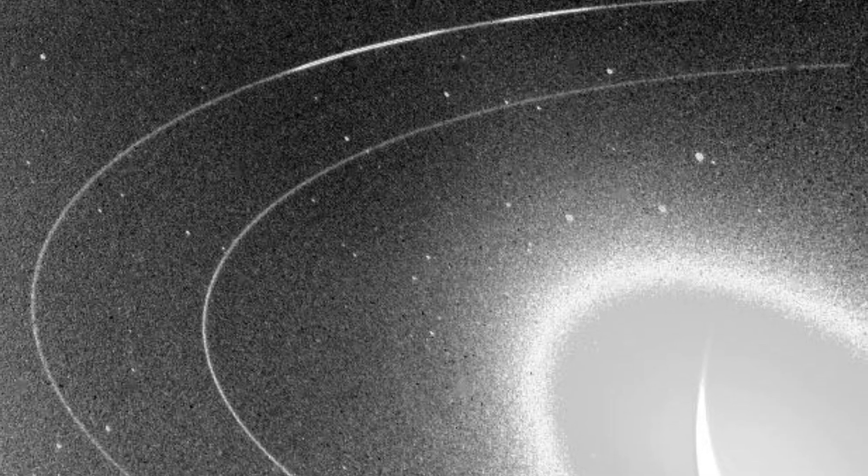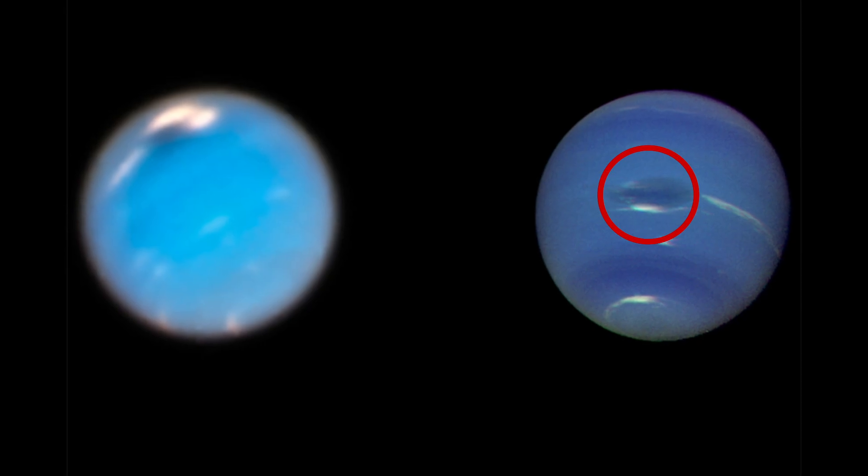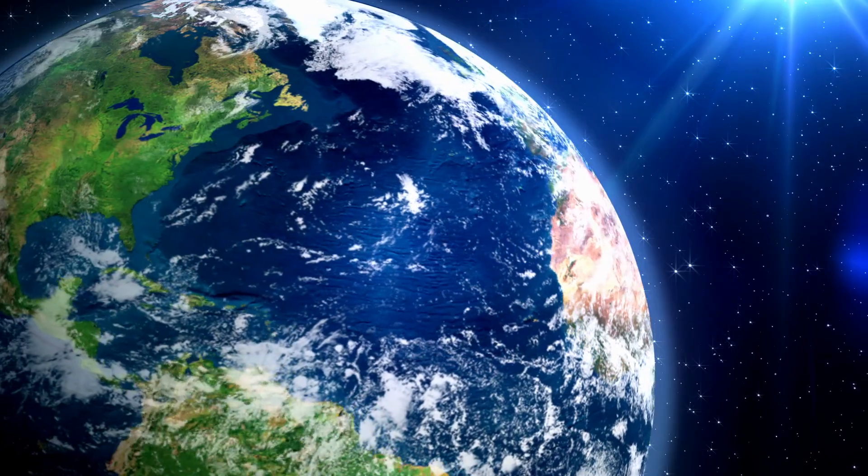When Voyager captured the planet in visible light, it saw a magnificent blue ball striped with white clouds and a black storm the size of the entire Earth.